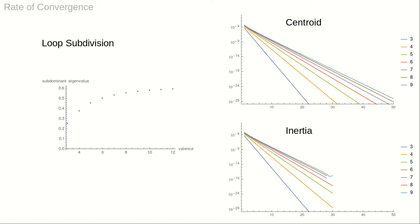The subdominant eigenvalue of S determines the rate of convergence of the geometric series. The smaller the subdominant eigenvalue, the faster the convergence. Here, we display the convergence for loop centroid and inertia forms for valences up to 9. Machine precision is obtained after 30 steps.